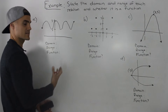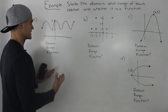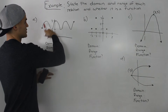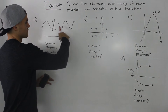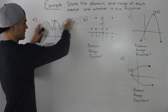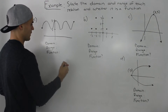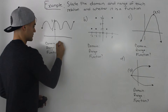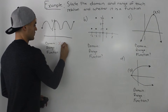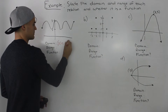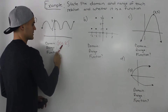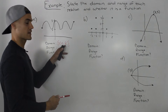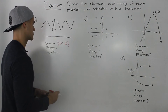The domain — the set of values that x can take — is anything, because this is just a wave, sort of like a trig function, that goes on forever. So there's an infinite amount of x values. The domain is x can be an element of real numbers. That's what we write when there's an infinite amount of x values.